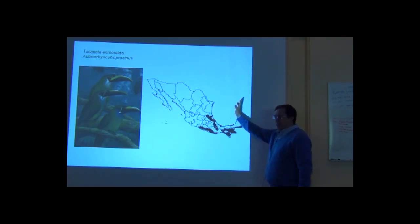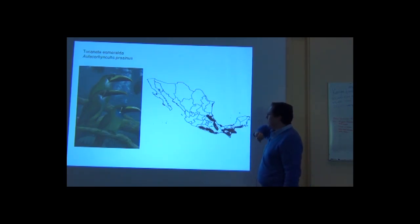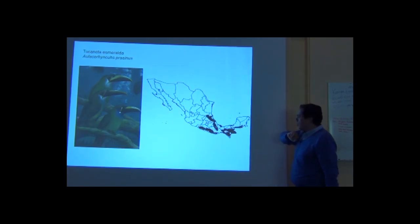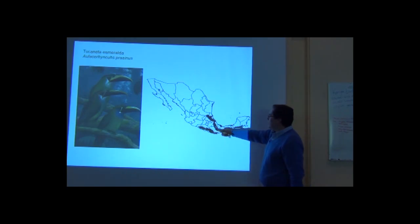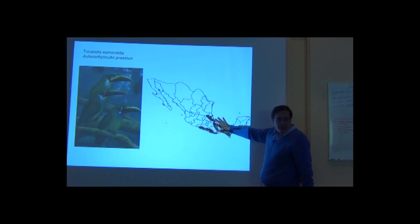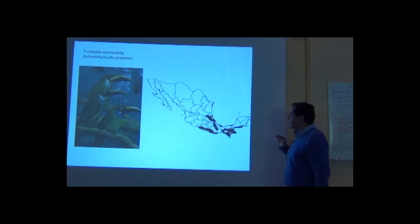We use GARP, which is one of the systems we have to produce potential distribution maps based on ecological niche modeling. This is an example of a map that depicts a resident species — a species that stays year-round in the area.